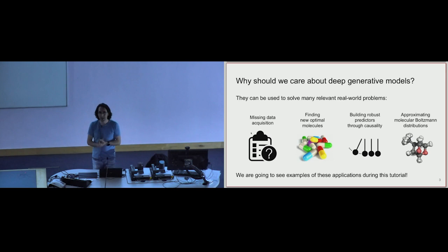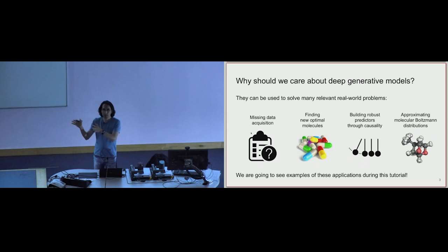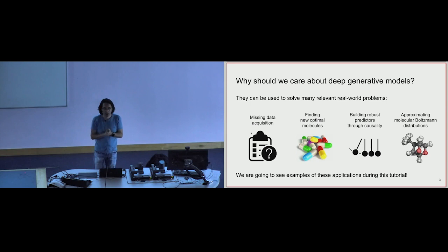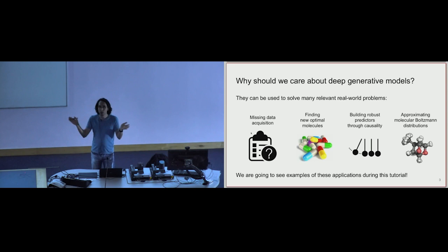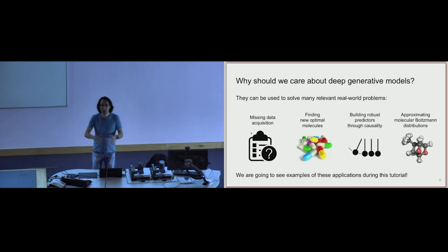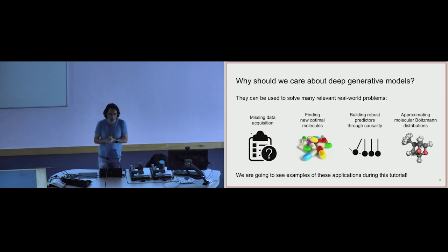You can use deep generative models, for example, to impute and acquire missing data in a dataset. You may have a dataset with missing data — for example, for a patient in a hospital, you may have access only to some symptoms and want to find out what disease the patient has. You want to collect data efficiently to perform tests and measurements. You can also use deep generative models to find new molecules with improved properties — for example, to design better drugs or materials.